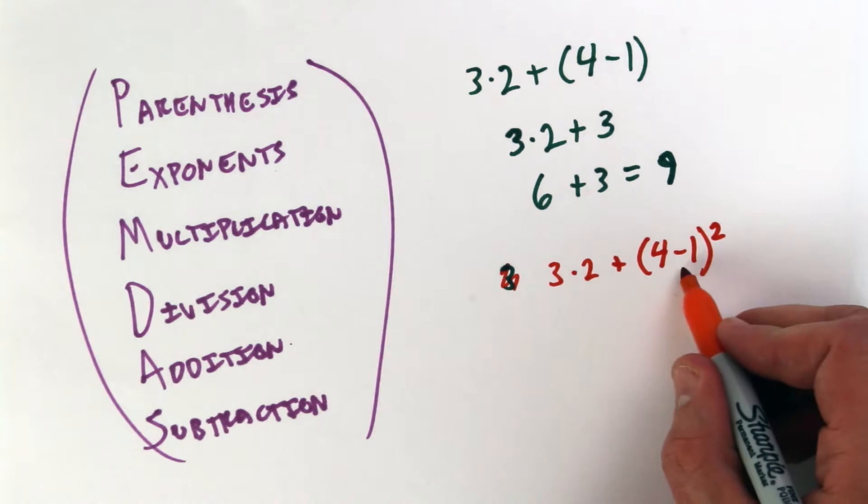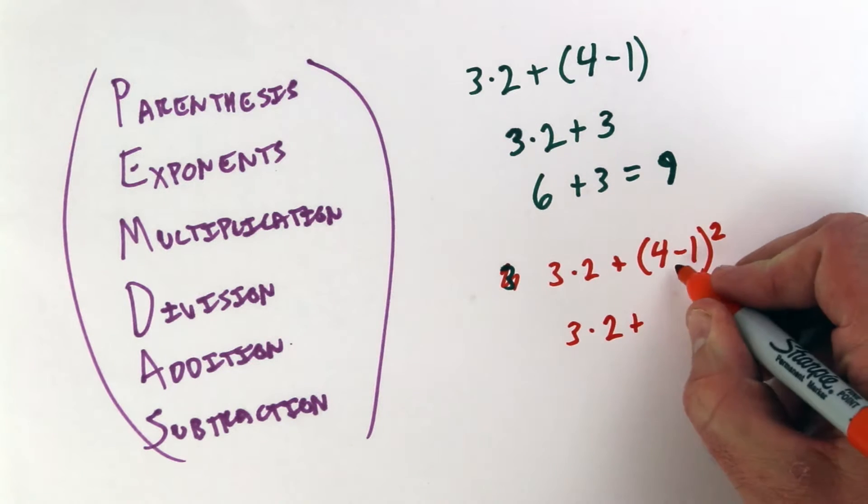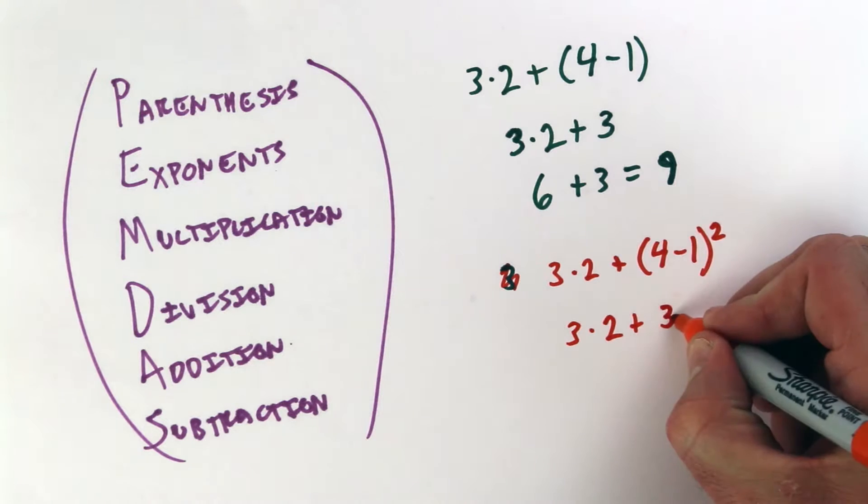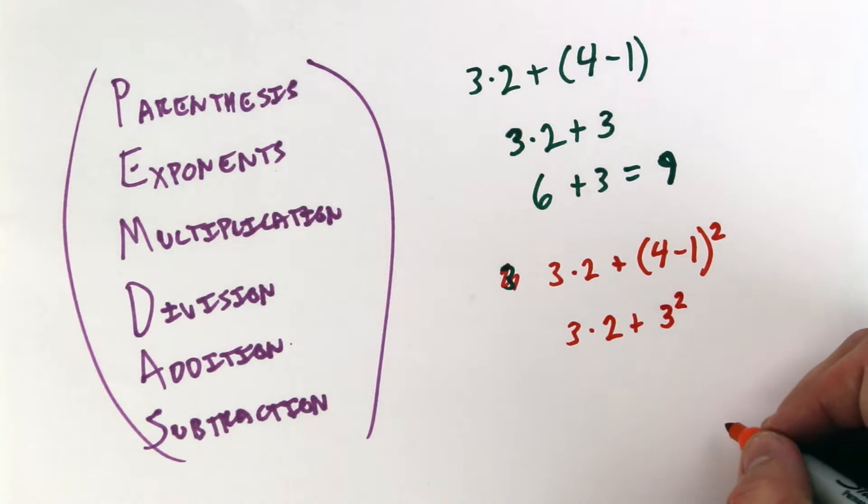So this will still come out to 3. So we'll have 3 times 2 plus, from the parentheses, 4 minus 1 is 3, squared. So we keep that exponent after we do what's in the parentheses.